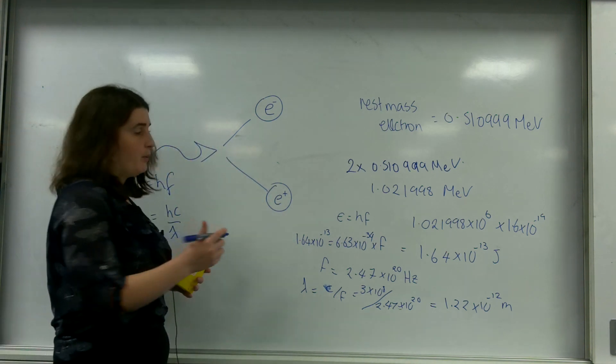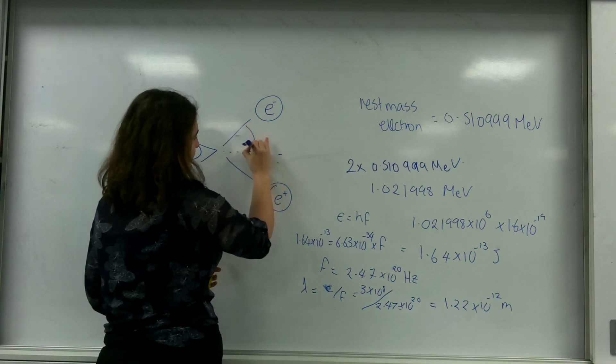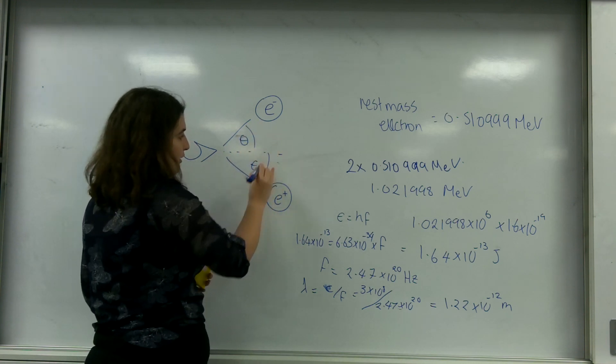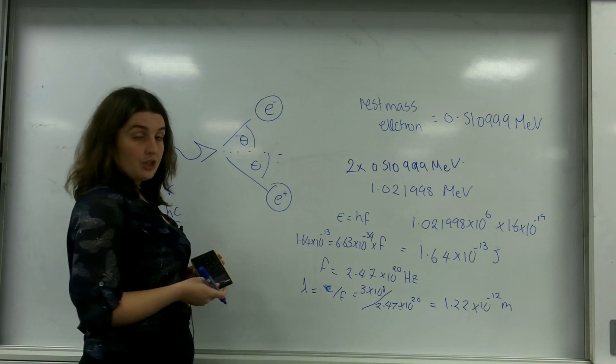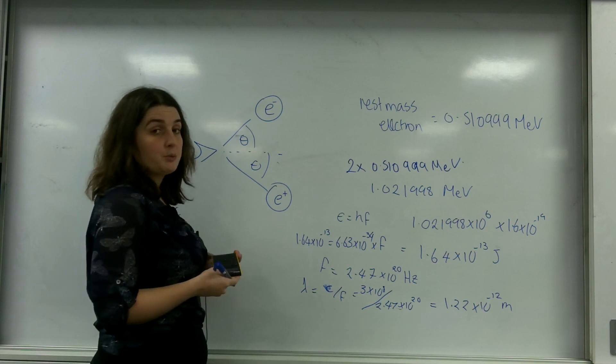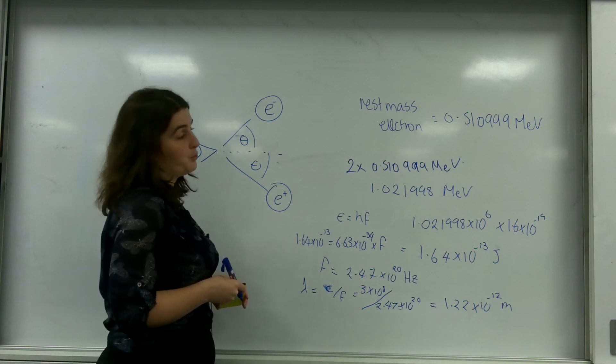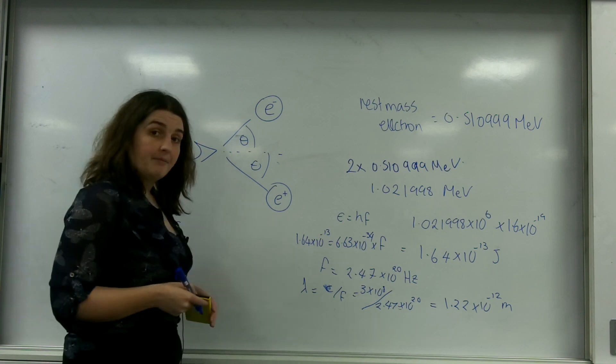Another point to note is the angle that they are emitted at would both be the same. This is to conserve momentum and this will be talked about more in the mechanics module. So that is pair production.